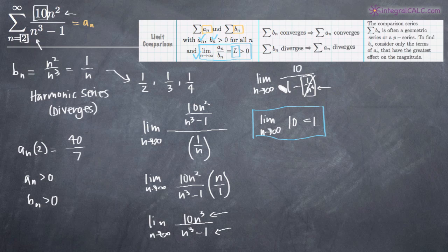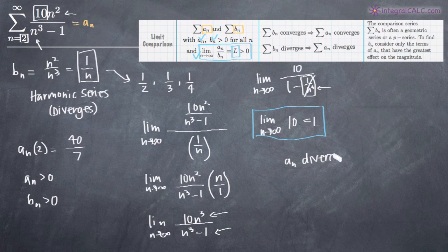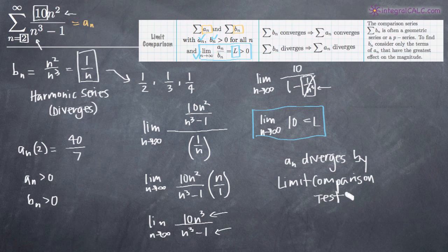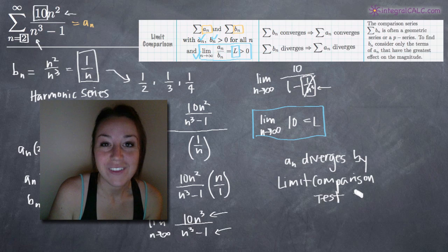Now that we know we can use the limit comparison test, we need to compare b sub n and a sub n. We know that b sub n is the harmonic series, which diverges, which means that a sub n must also diverge. So we can say a sub n diverges by the limit comparison test. That's our final answer. I hope that video helped you guys and I will see you in the next one. Bye!